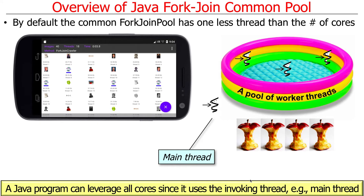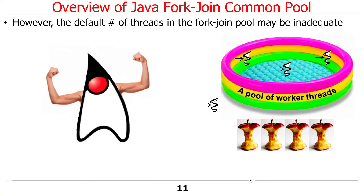When you invoke the fork join pool, the thread that invokes it is also borrowed and used to do computations as well. So whether it's the main thread, the user interface thread, or some other invoking thread, that thread will also be used as part of the pool, giving you one additional thread for processing. The idea is to take advantage of all the threads on the processor.